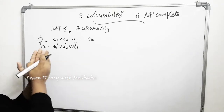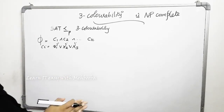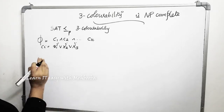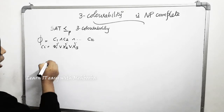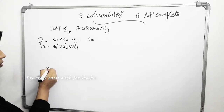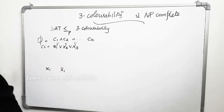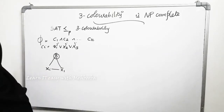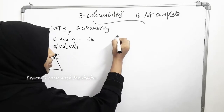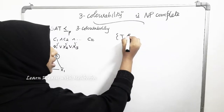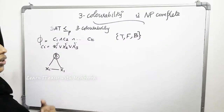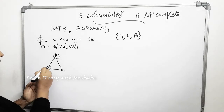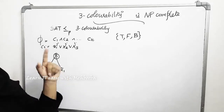We need to convert the SAT formula into a graph, since SAT deals with formulas whereas colorability deals with graphs. For every variable Xi in the formula, we create nodes for Xi and for Xi complement. Then we connect Xi and Xi complement to each other and also to a common base node. We are devising a graph with 3 colors: Truth (T), False (F), and Base (B).